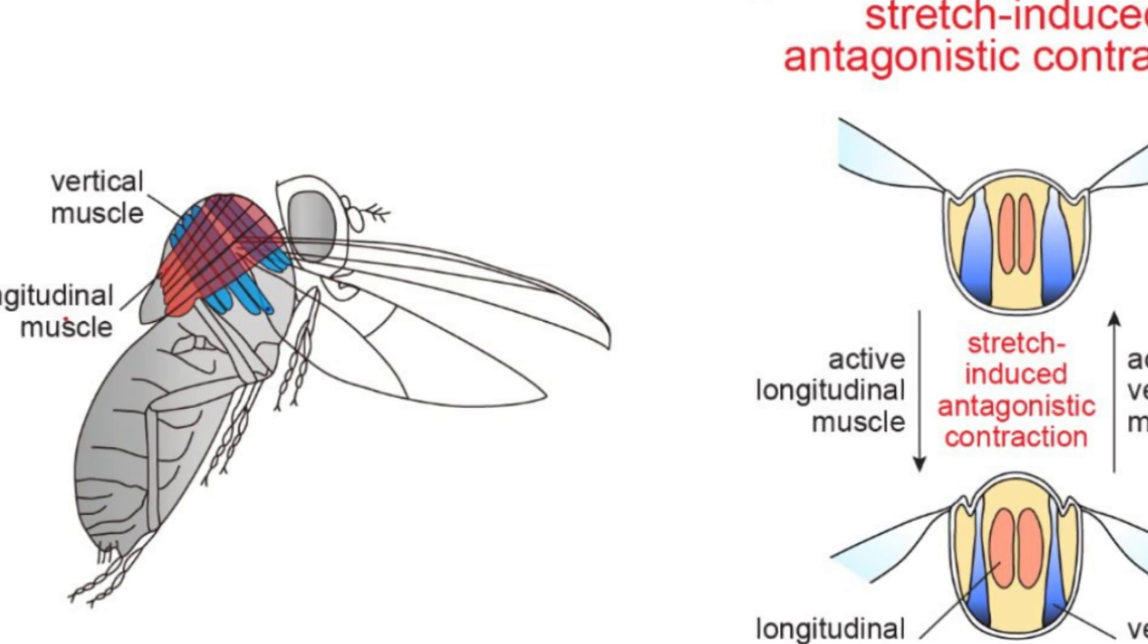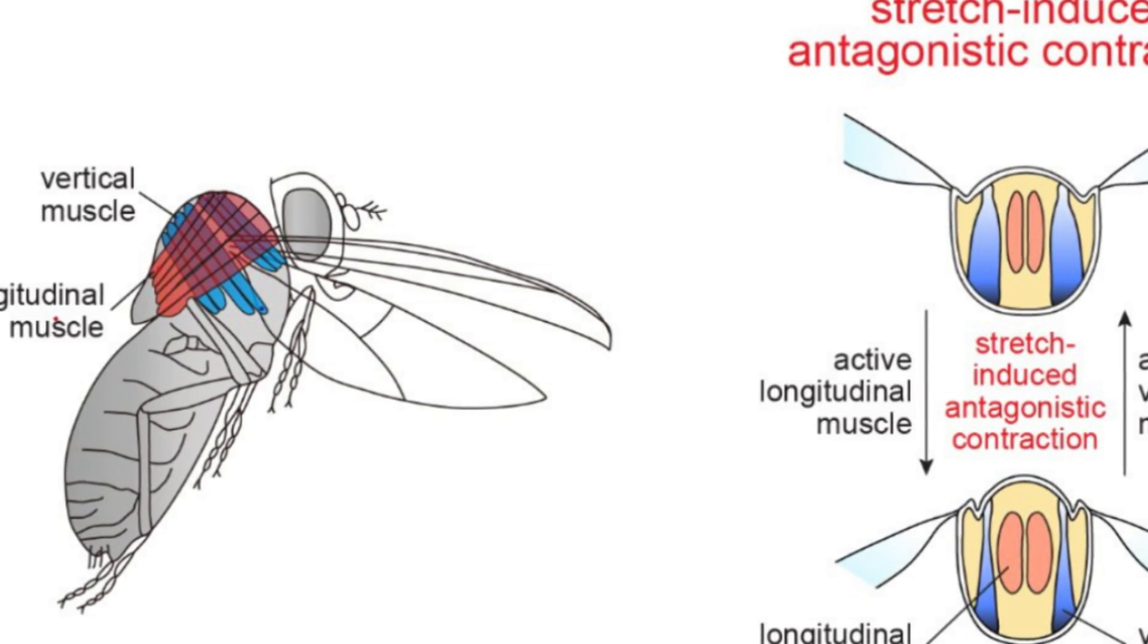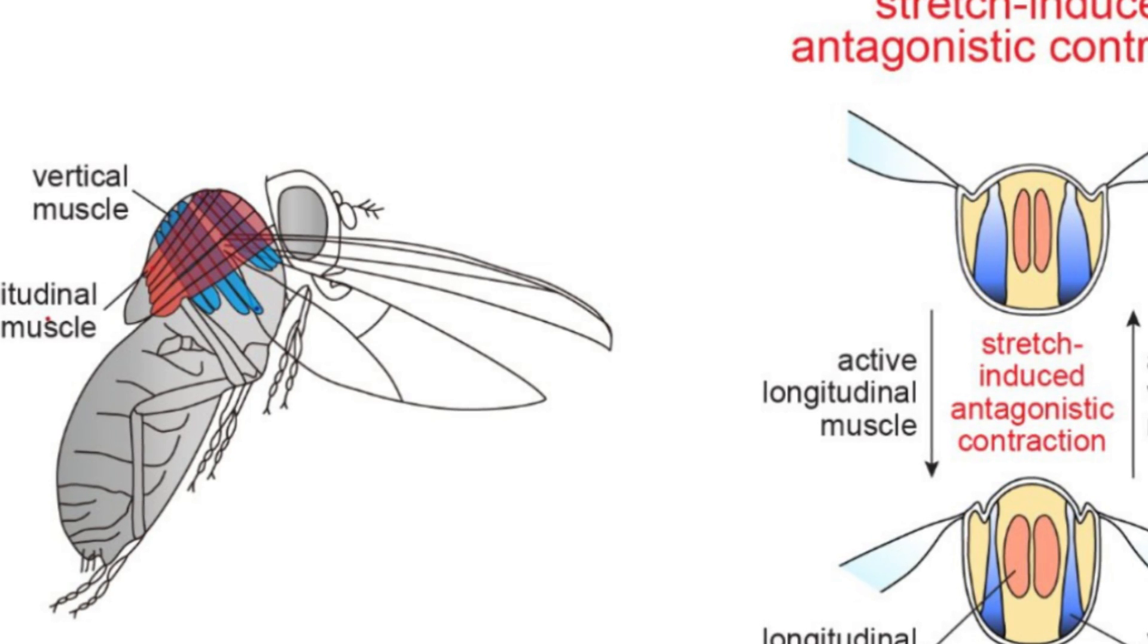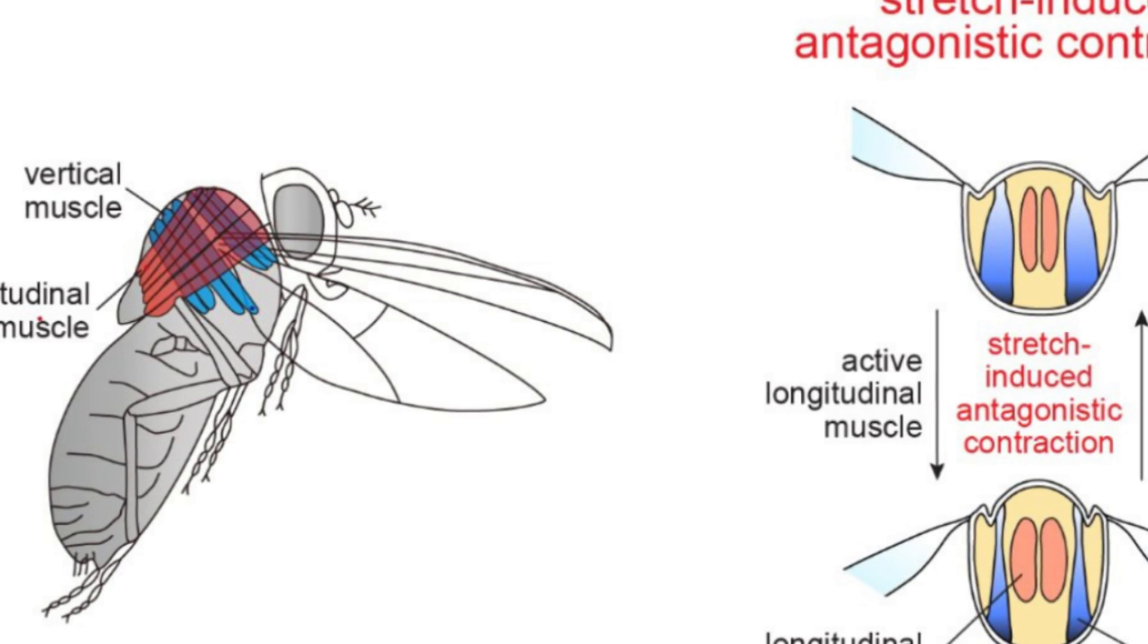Rather than using heart imaging as a blueprint, we are identifying the key biophysical principles that make the heart work, using them as design criteria and replicating them in a system—a living, swimming fish—where it is much easier to see if we are successful, says Parker.